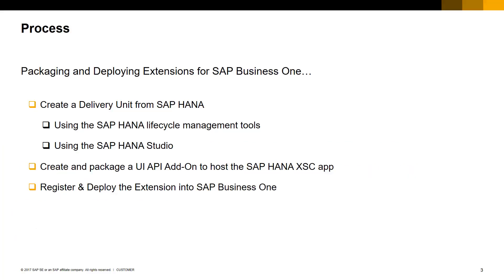The agenda shows the process to be followed in order to package and deploy SAP Business One extensions. First, you create a delivery unit, which can be regarded as a collection of several packages for centralization of management. You can create a delivery unit using SAP HANA Lifecycle Management tools or SAP HANA Studio. Secondly, you need to create an add-on to embed the new SAP HANA app into SAP Business One client. You will package this add-on with your app and finally register and deploy the package in SAP Business One. We will cover each step in detail in the following slides.